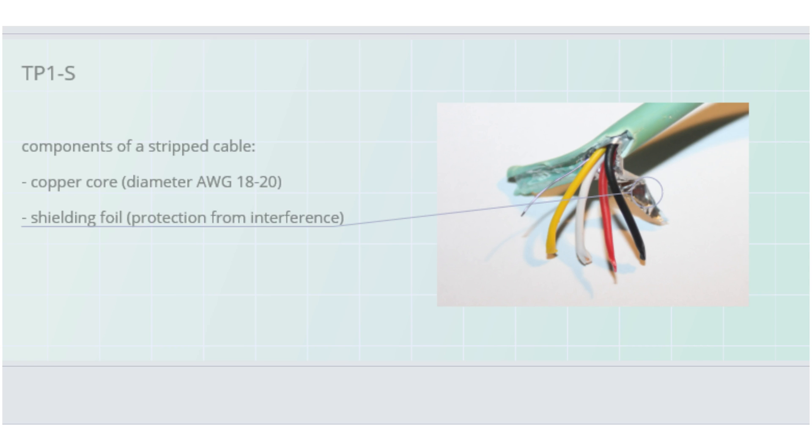This is surrounded by shielding foil to protect the cables from interference. Outside that is a thick protective sheath.